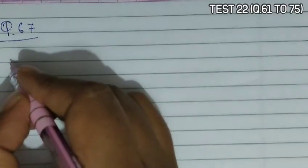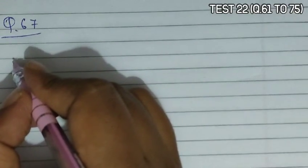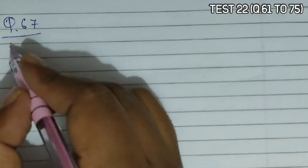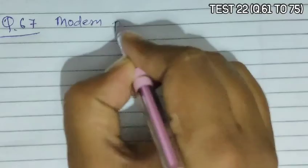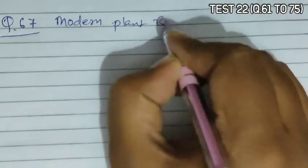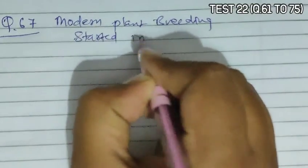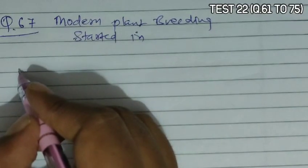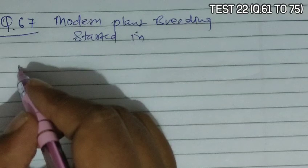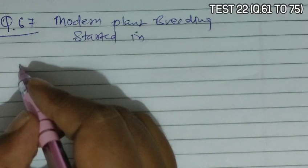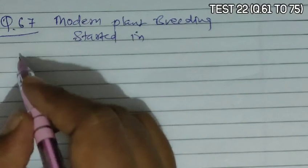Question 67 asks that modern plant breeding started in. Modern plant breeding started with the rediscovery of Mendel's paper in 1900, which was originally published in 1866.